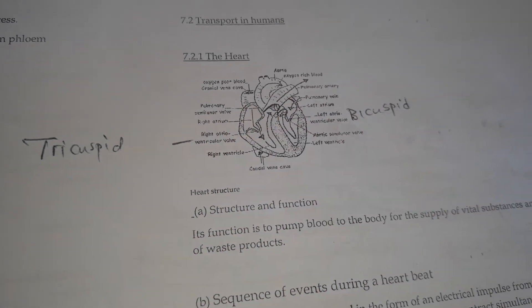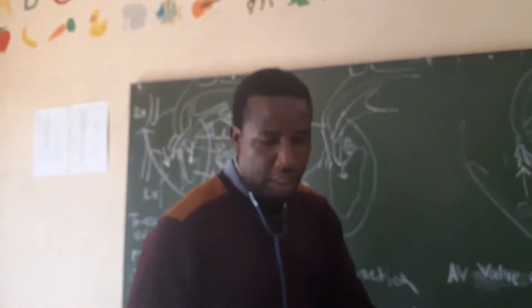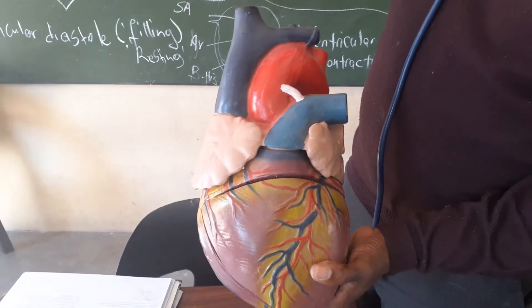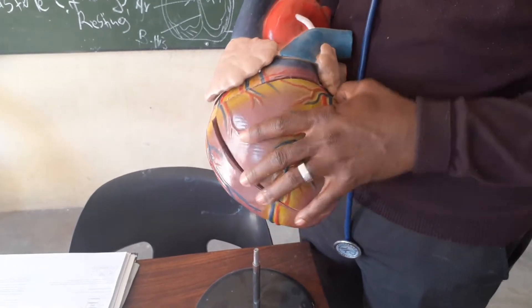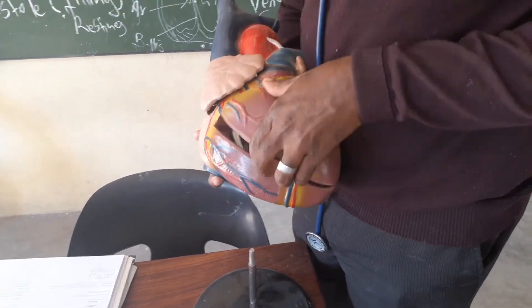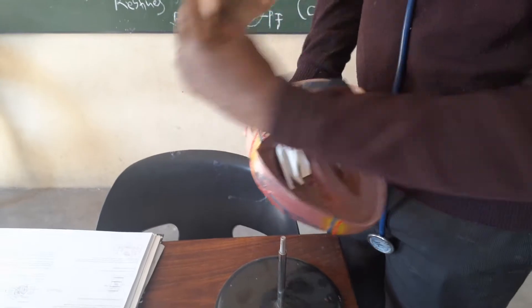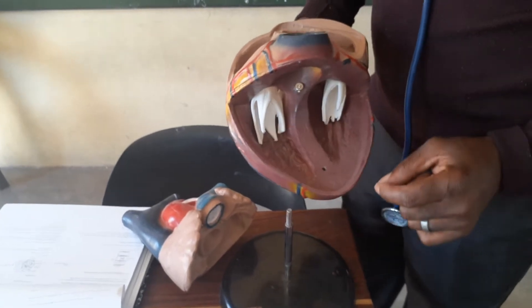Everything else is the same as you have done it in grade 10, grade 11 and other grades. Let's go to the sequence of events that happen during the heartbeat. So this is a model of the heart. What you see here — this is the aorta, these are the pulmonary arteries, and these are the coronary arteries, the ones that supply blood to the heart muscle. When you look inside, you have the atrium, the ventricle, and the valve.